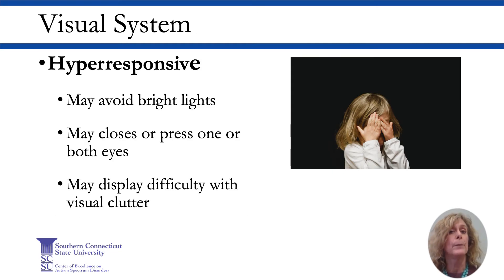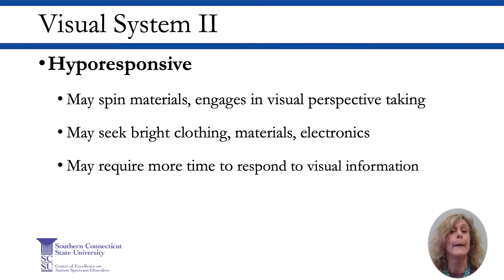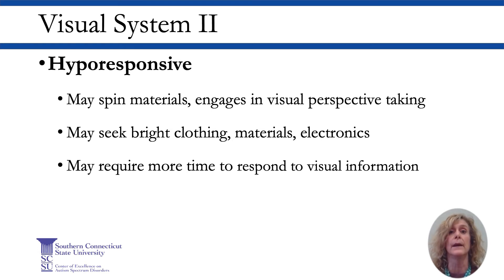Students who are hyper-responsive or over-reactive to visual input may avoid bright lights or press or rub their eyes. Finding objects in visual clutter may also be challenging. They may have a harder time in classrooms that have a lot of decorations and visual information on the walls. Students who are hypo-responsive or under-reactive to visual input may seek spinning items or bright clothing, and may be slow to respond to their visual environment, ultimately requiring more time to generate a response to visual information.